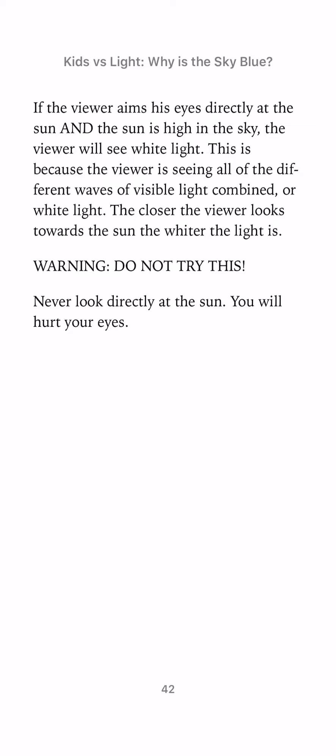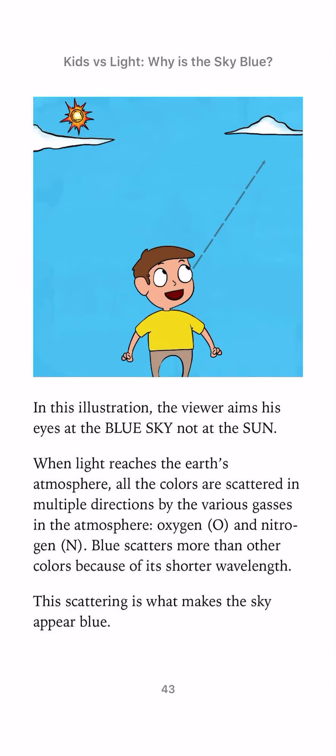The closer the viewer looks towards the Sun, the whiter the light is. Warning: do not try this — never look directly at the Sun, you will hurt your eyes. In this illustration, the viewer aims his eyes at the blue sky, not at the Sun. When light reaches the Earth's atmosphere, the colors are scattered in multiple directions by the various gases — oxygen and nitrogen. Blue is scattered more than other colors because of its shorter wavelength, and this scattering is what makes the sky appear blue.